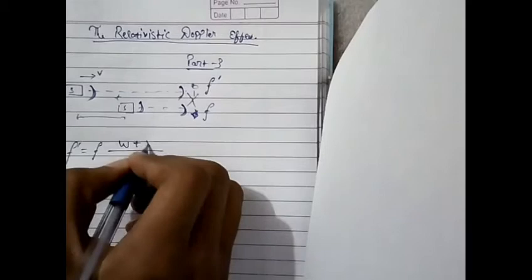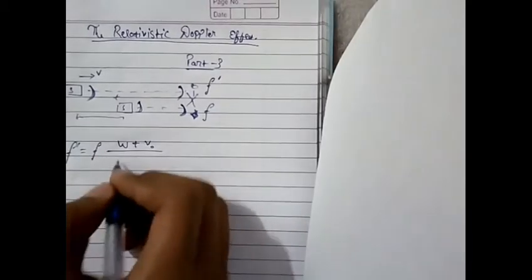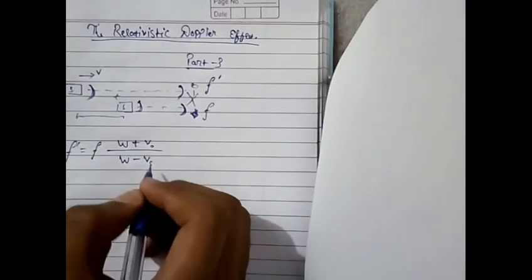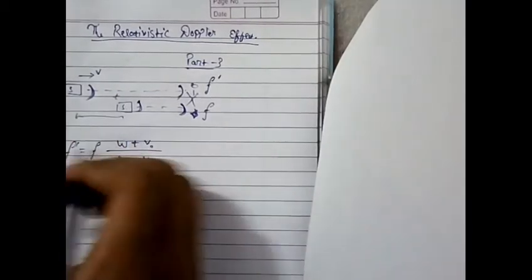Speed of sound plus the velocity before that was rest divided by the speed of sound minus Vs that is velocity right now.